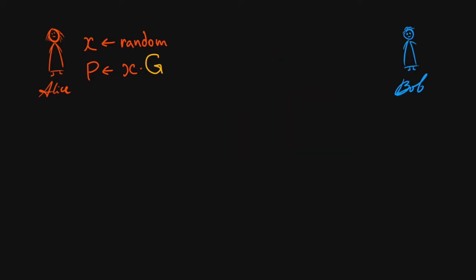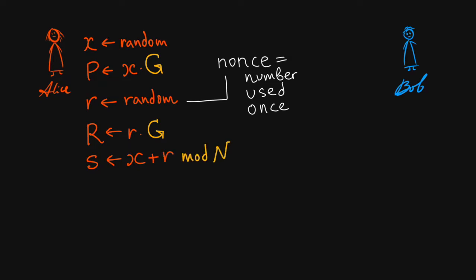What if instead of sending X in the clear she sends a blinded version of X? To do this Alice creates an additional random number R, also called a nonce, and commits to it using another point uppercase R which is computed in the same way as the public key. Then Alice blinds X by adding R to it, modular number of points on the curve. We will call the result a siglet. Finally she sends Bob the siglet S and the nonce commitment R. Bob now knows S but cannot learn the private key from it because it is blinded by the nonce.